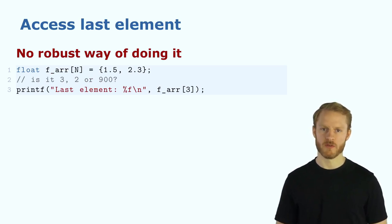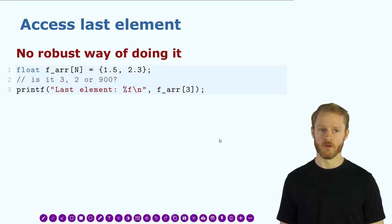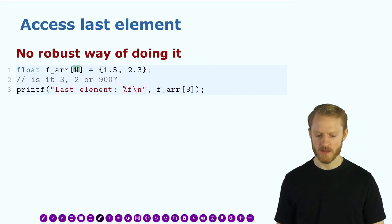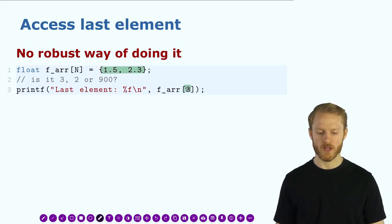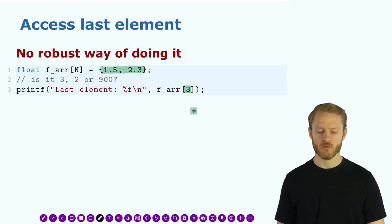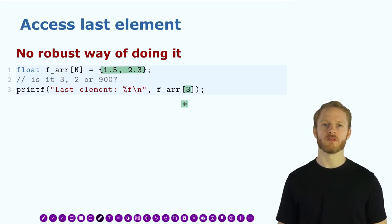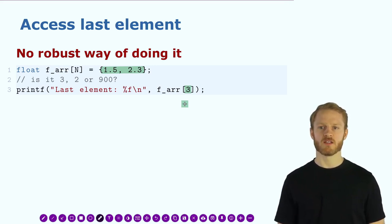Also, if we want to access the last element of an array, we have to remember the length of the array. For example, if we have only two elements and try to access position 3, it's not clear what the result will be. Our container only occupies positions 0 and 1, so accessing position 3 — this program will still compile and run, but we will have a bug.